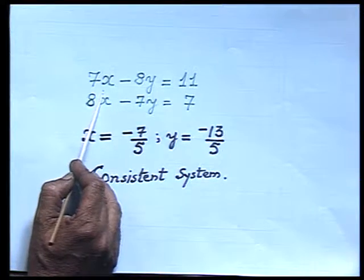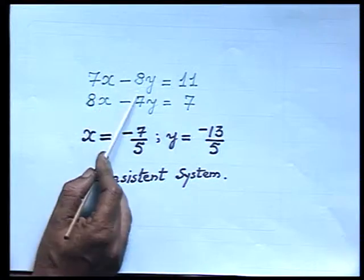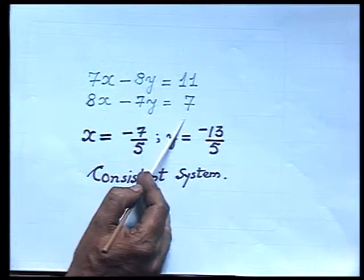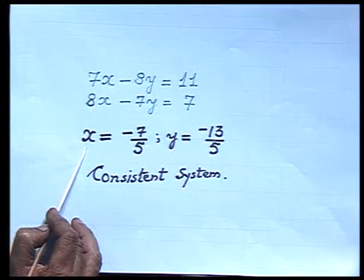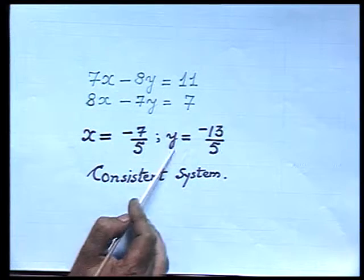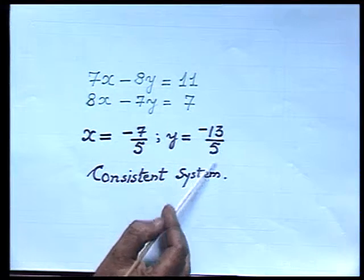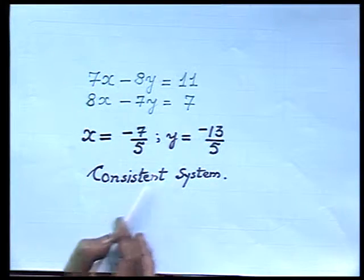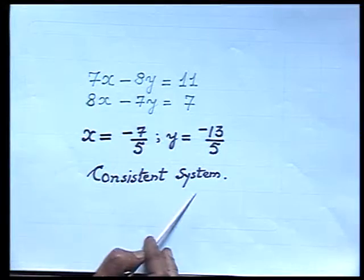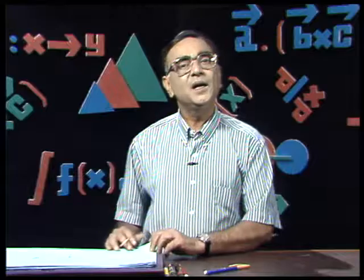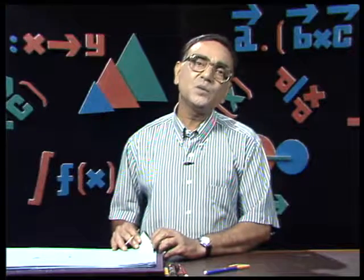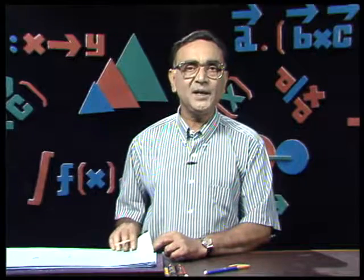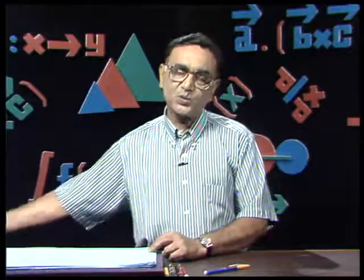The system 7x minus 8y equals 11 and 8x minus 7y equals 7 gave us x equals minus 7/5 and y equals minus 13/5. Since we are getting a unique value of x and y, this system is a consistent system. And we are asking whether there is any other method of solving linear equations — yes, of course we have.